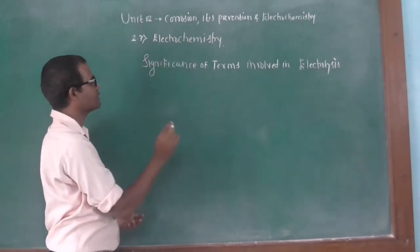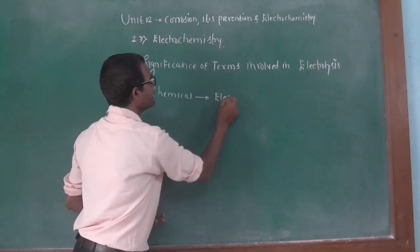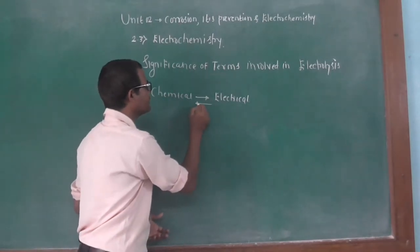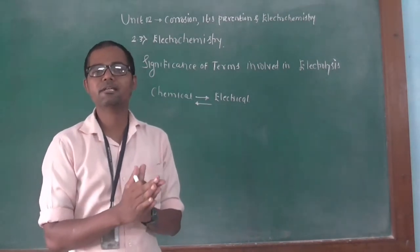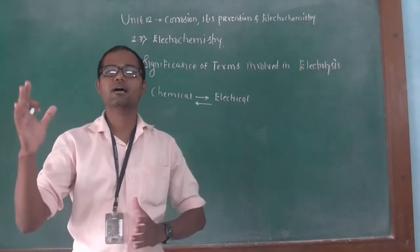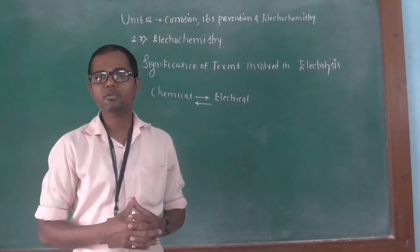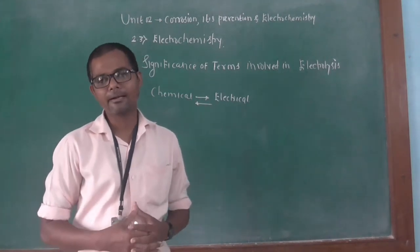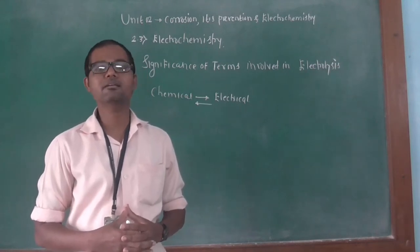Electrochemistry is a branch of science dealing with the study of conversion of chemical energy into electrical energy, and also electrical energy converted into chemical energy. It includes the study of chemical decomposition of an electrolyte when electrical current is passed into it, and the production of electricity when chemical changes happen. That process is simply called electrochemistry.